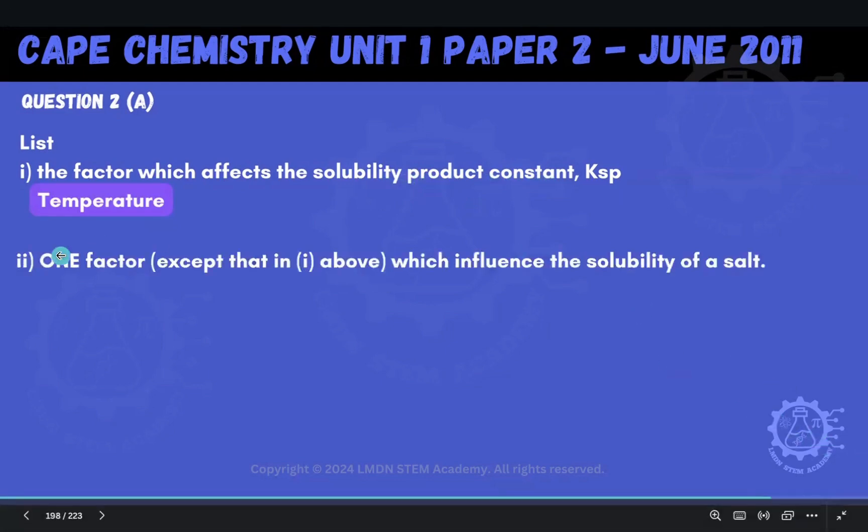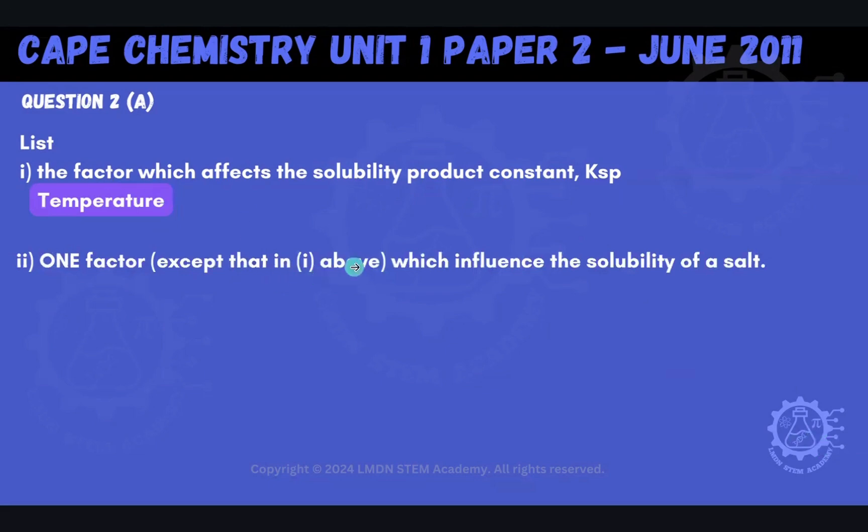Then we're asked to list one factor, except that in part 1 above, which influences the solubility of a salt. So what's going to affect the solubility itself of a salt? The presence of ions in the solution that are in common with those in the salt will affect the solubility.